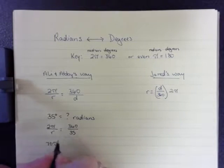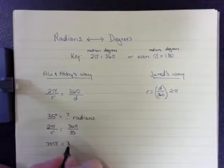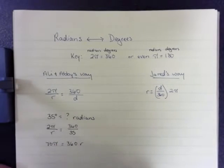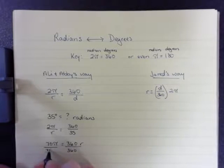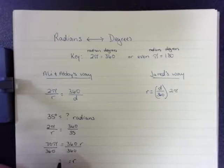So I have 70 pi, because I'm cross-multiplying, equals 360 times r. I divide everything through by 360. And so I get r equals 7 over 36 pi.